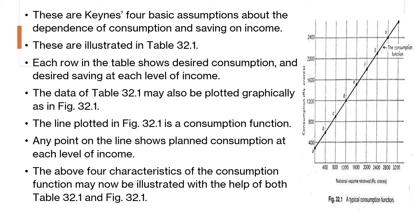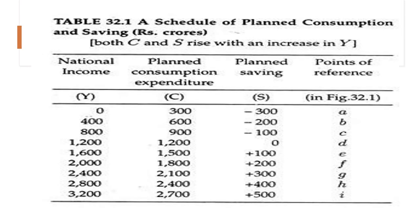Let's understand this by using an example. Each row in the table explains the desired saving at each level of income, and this could be plotted graphically. Any point on the line shows planned consumption at each level of income. In the table, the first column shows national income, the second column shows consumption expenditure, the third column shows saving, and the fourth column shows the reference points for the diagram. National income is increasing from 0 to 400, 800, 1200, 1600, 2000, 2400, 2800, and 3200.